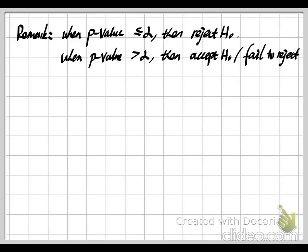This is the end of our video about the two important types of errors and the p-value. In the next video, I will start to talk about how to use hypothesis testing to draw conclusions about the population mean for the normal distribution when variance is known. Please subscribe to this channel — see you in the next video. Bye.